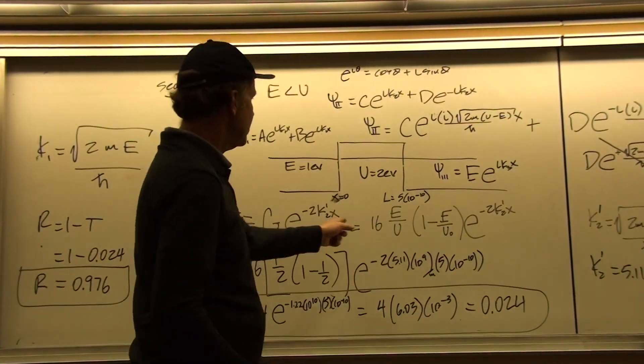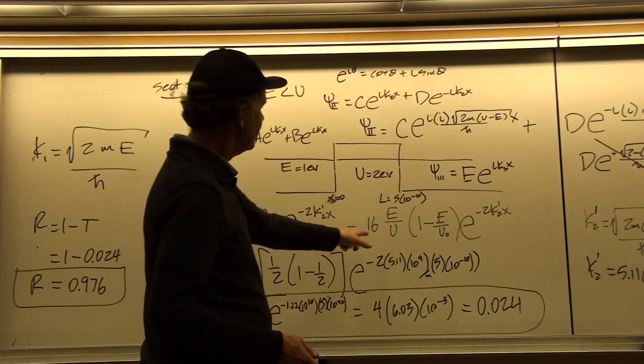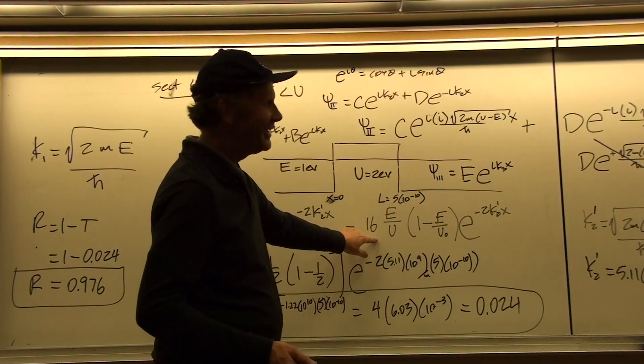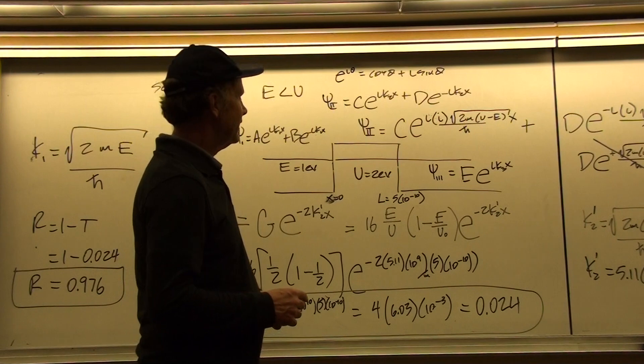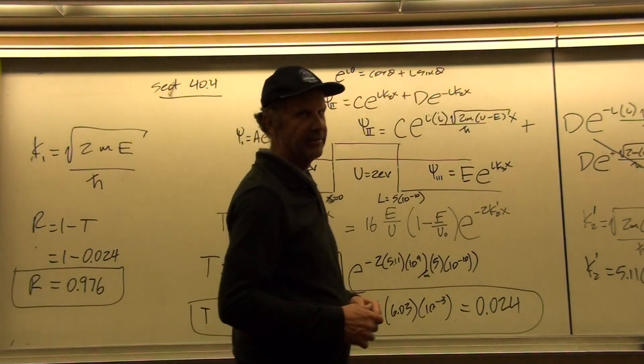And so if we use that result with a value of l, now this by the way is a much more complicated algebraic result if we do it in general. It's got hyperbolic signs and all kinds of stuff in it.